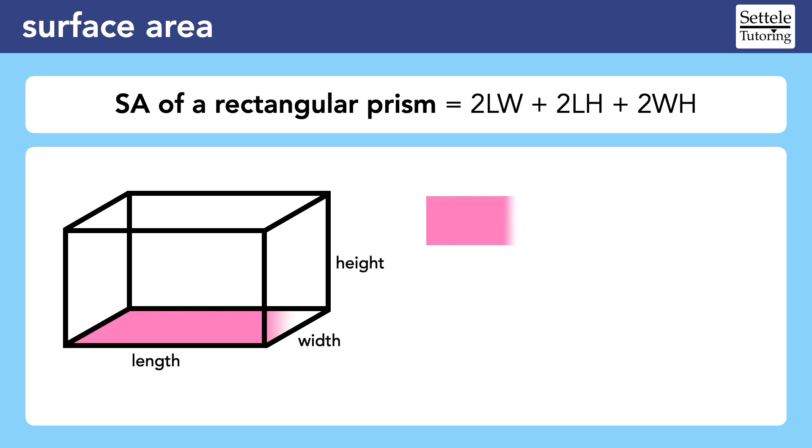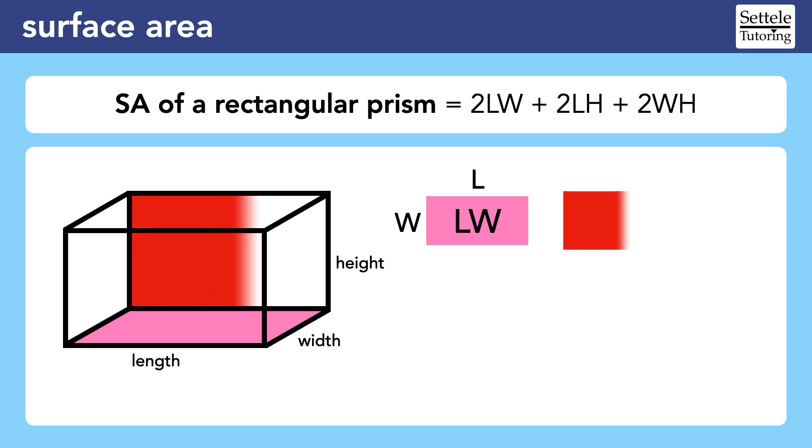This time let's start with the bottom, which is a rectangle with the length and width as its dimensions, so the area would be the length times the width. The back is also a rectangle, and it also uses the length as one side, but the other side uses the height, so the area for this face is the length times the height.